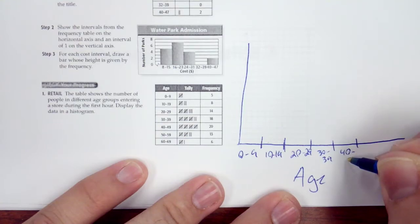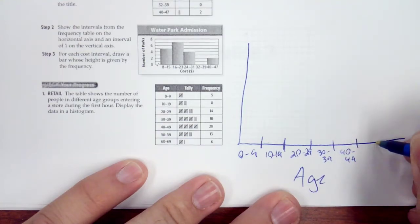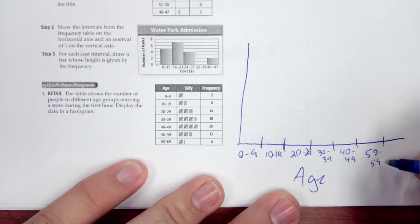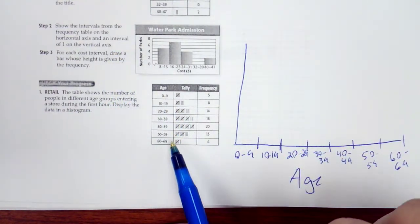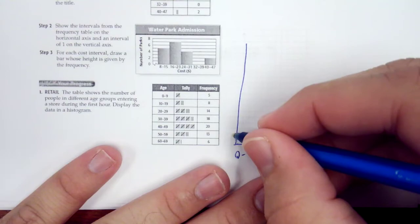40 to 49, 50 to 59, and then 60 to 69. Okay, and that gives us all the way to where we need to be. And then we're going to go up here.